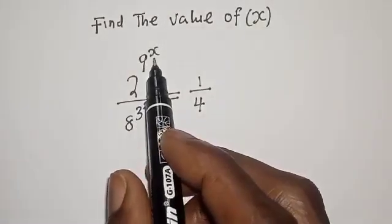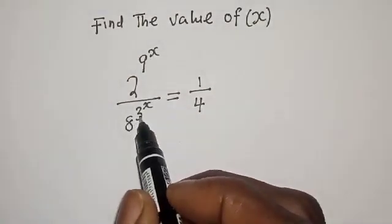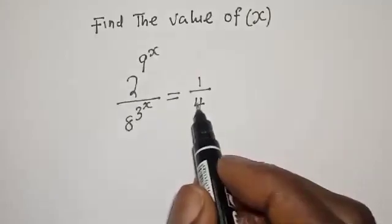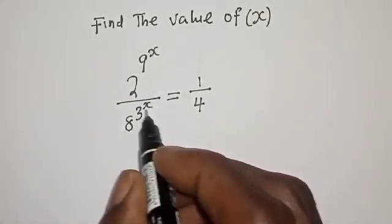2 raised to power 9 raised to power s, divided by 8 raised to power 3 raised to power s, is equal to 1 over 4. What is the value of s?